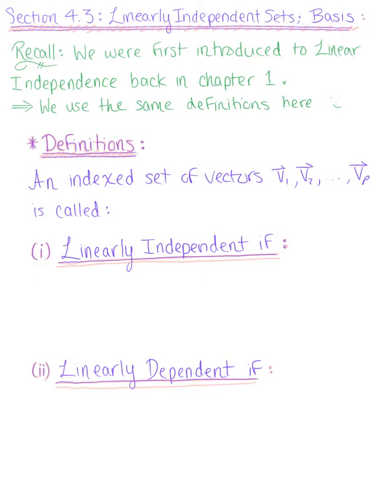So to get us started, let's recall those definitions. So we say that an indexed set of vectors, v sub 1, vector v sub 2, all the way up to vector v sub p is called: